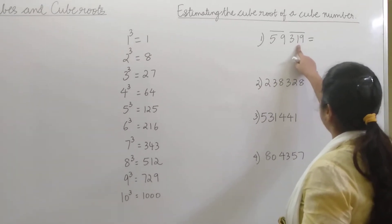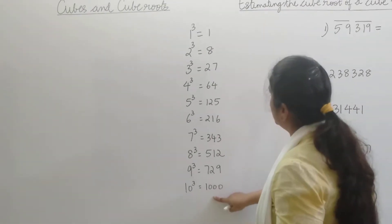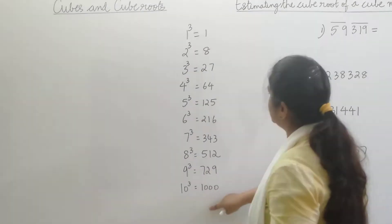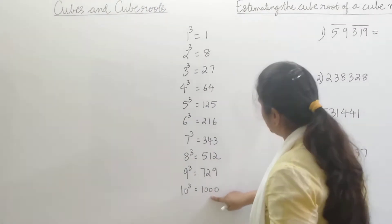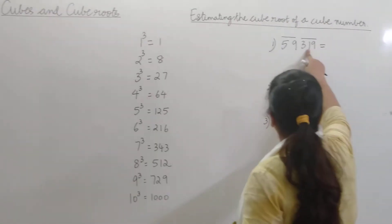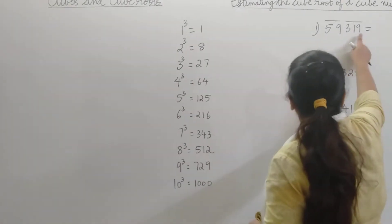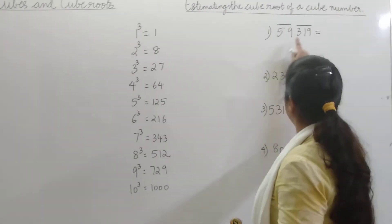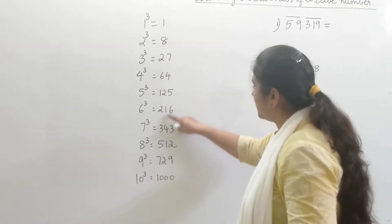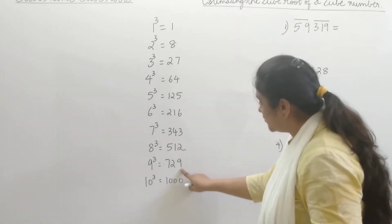Take out the first group 319. You can see the cube numbers here from 1 to 10 — these are the cubes of the first 10 natural numbers. We need to look for that cube number that ends with the digit 9, since 319 ends with 9. That number is 729, which ends with the digit 9.